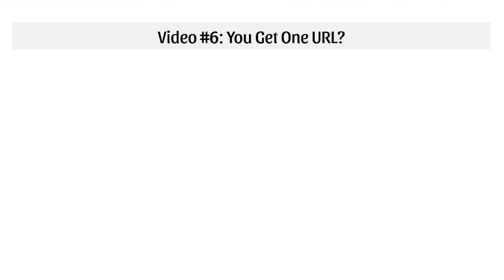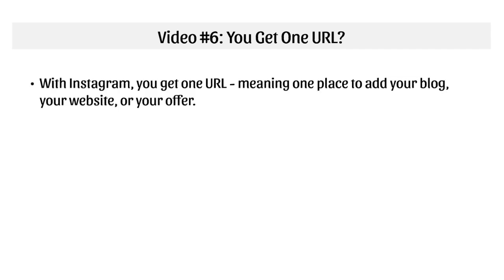Welcome back. This is video number six, called 'You Get One URL.' That's the reality with Instagram — you get one URL, meaning one place to add your blog, your website, or your offer. It's not like Facebook where you can create a post every single time and put a URL directly to your offer. So you've got to choose it wisely. The question is: what URL should you use?